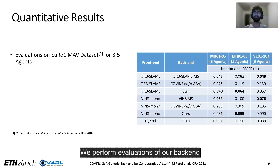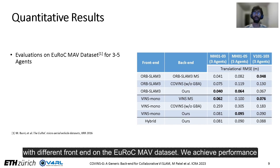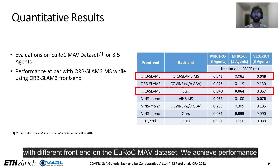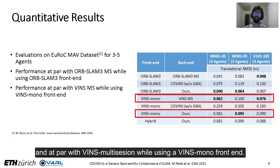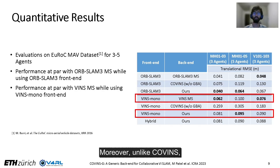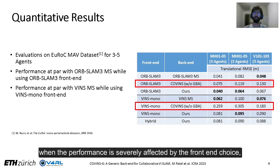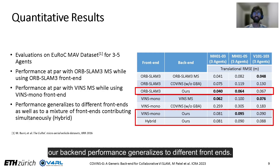We perform evaluations of our backend with different frontends on the EuRoC MAV dataset. We achieve performance on par with ORB-SLAM 3 multi-session while using an ORB-SLAM 3 frontend, and on par with VINS-Mono while using a VINS-Mono frontend. Moreover, unlike Covins where the performance is severely affected by the frontend choice, our backend performance generalizes to different frontends.